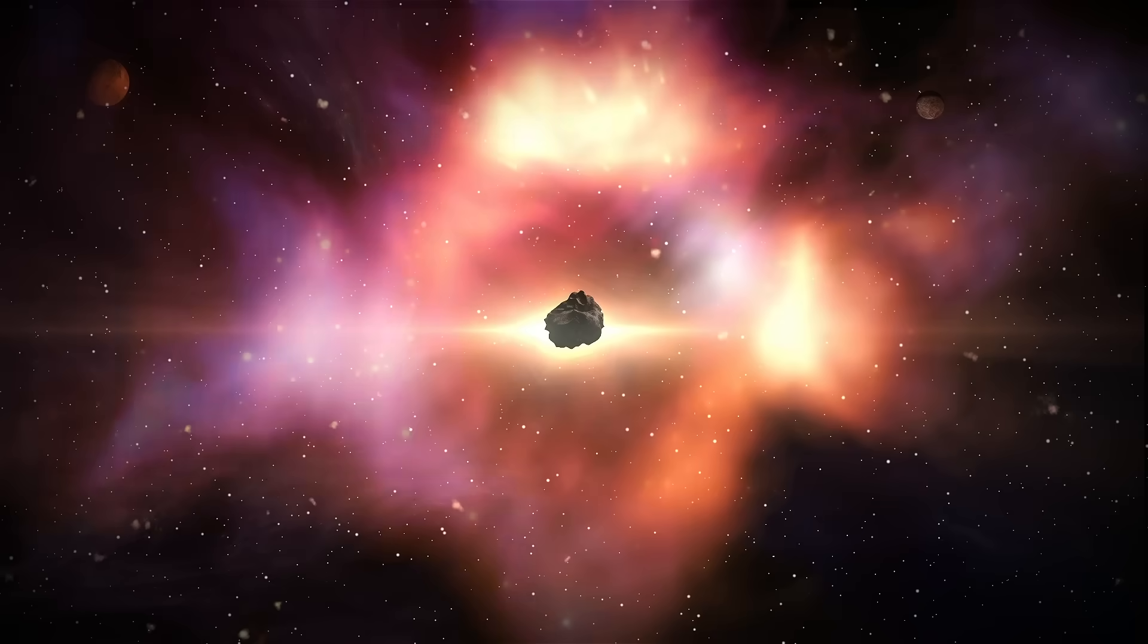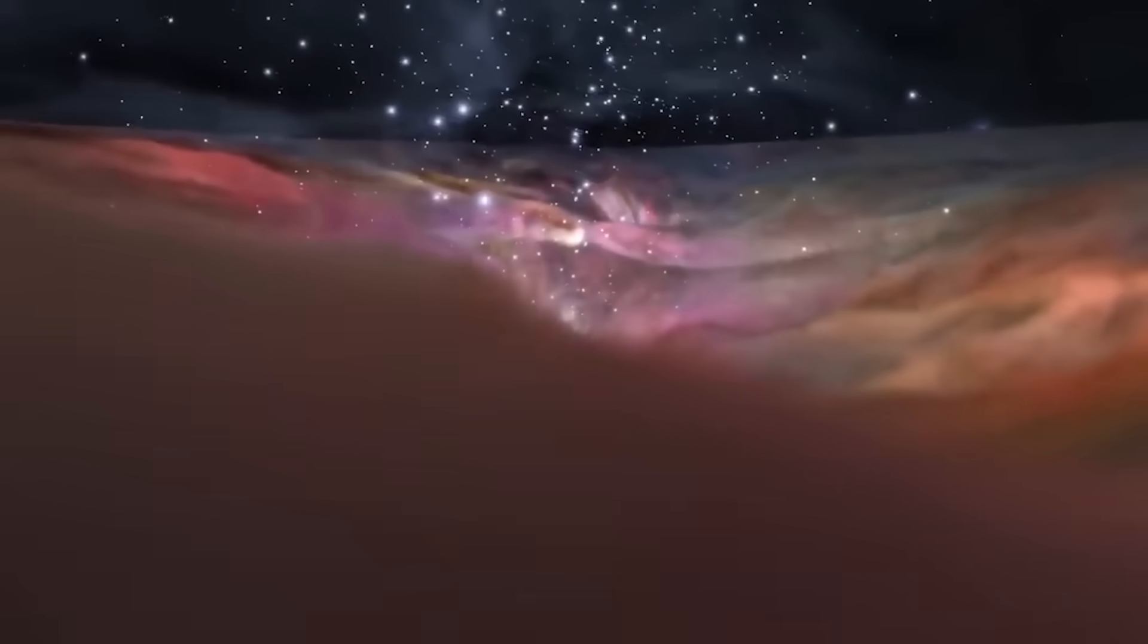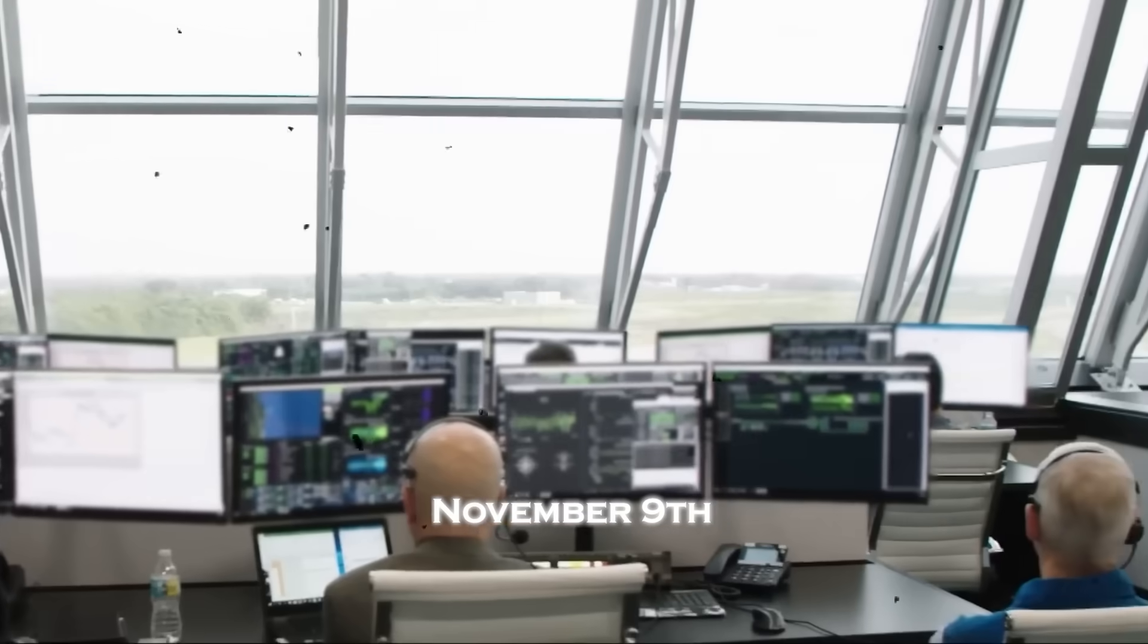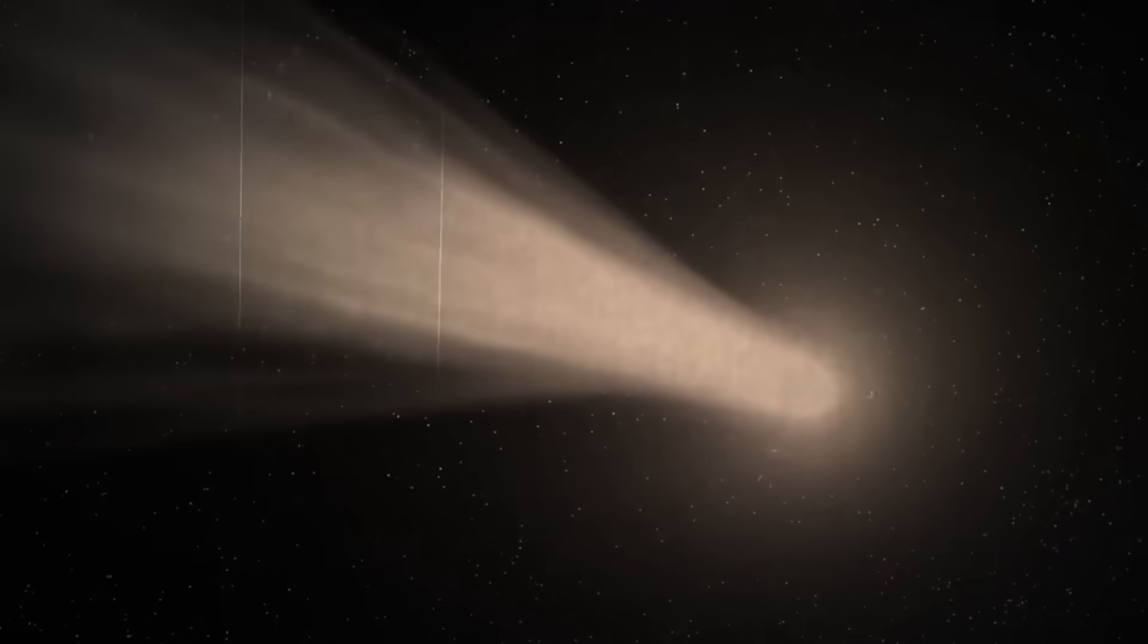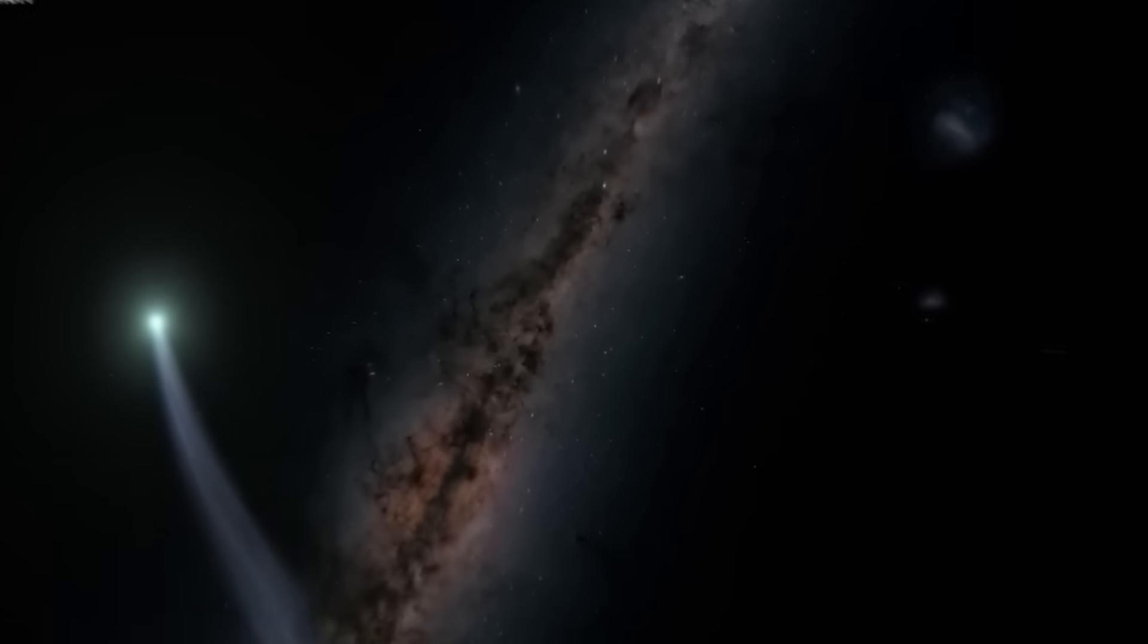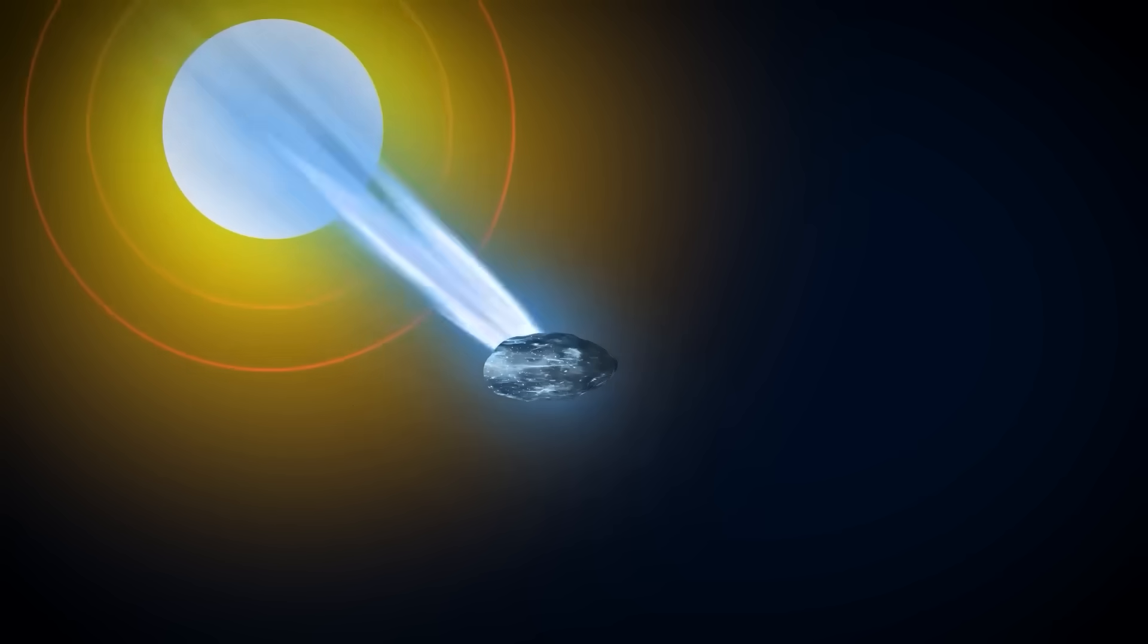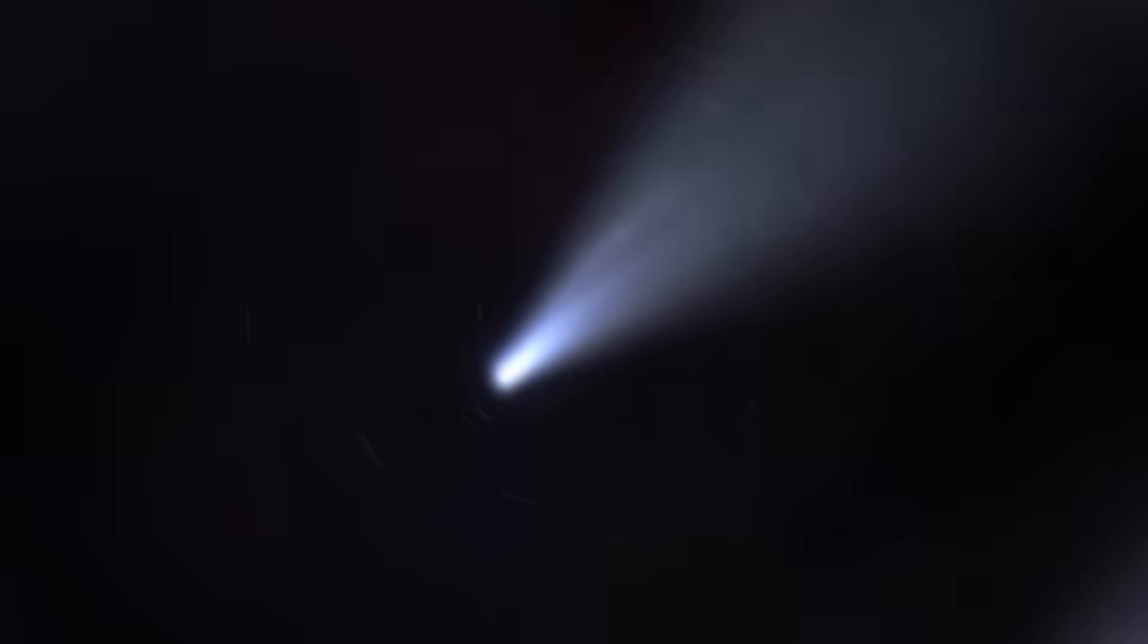To understand just how bizarre 3i Atlas has become, we need to start with the event that first set off alarm bells. On November 9th, astronomers captured images revealing a massive tail, actually two massive tails, stretching millions of kilometers through space. One pointed normally away from the sun, as expected. The other pointed almost directly toward the sun, forming an ultra-rare feature known as an anti-tail. But the real problem wasn't the direction. It was the scale.